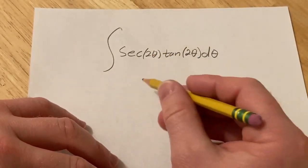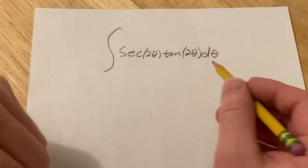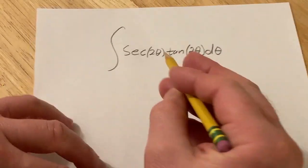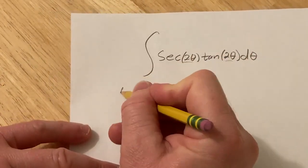So the first step is to make it look like the integral of secant x tangent x, because that we can integrate right away. So we have to get rid of this 2 theta, so we'll start by making a substitution.